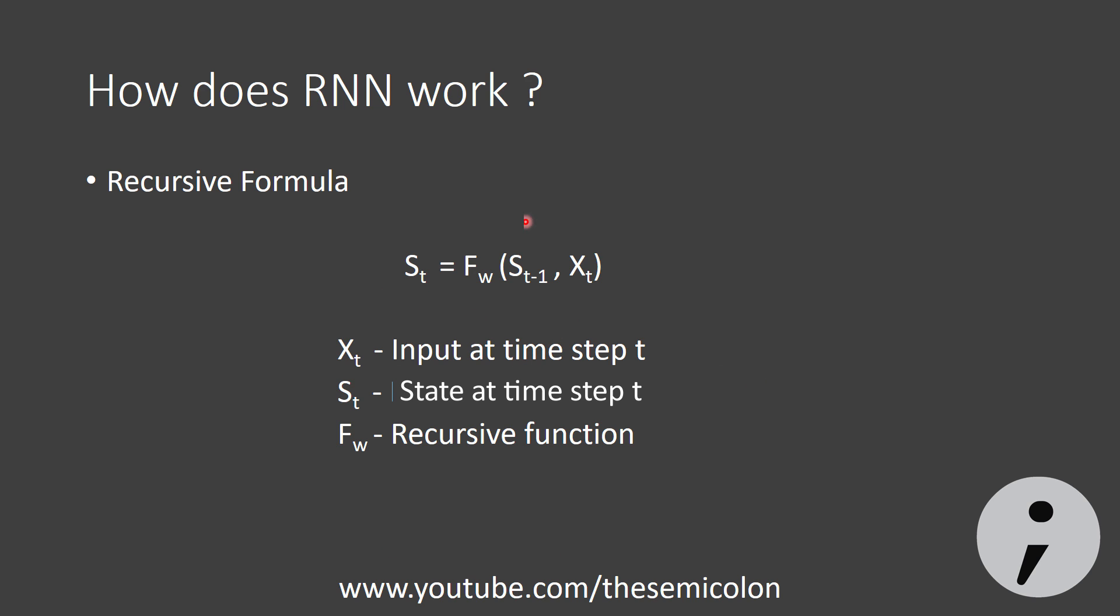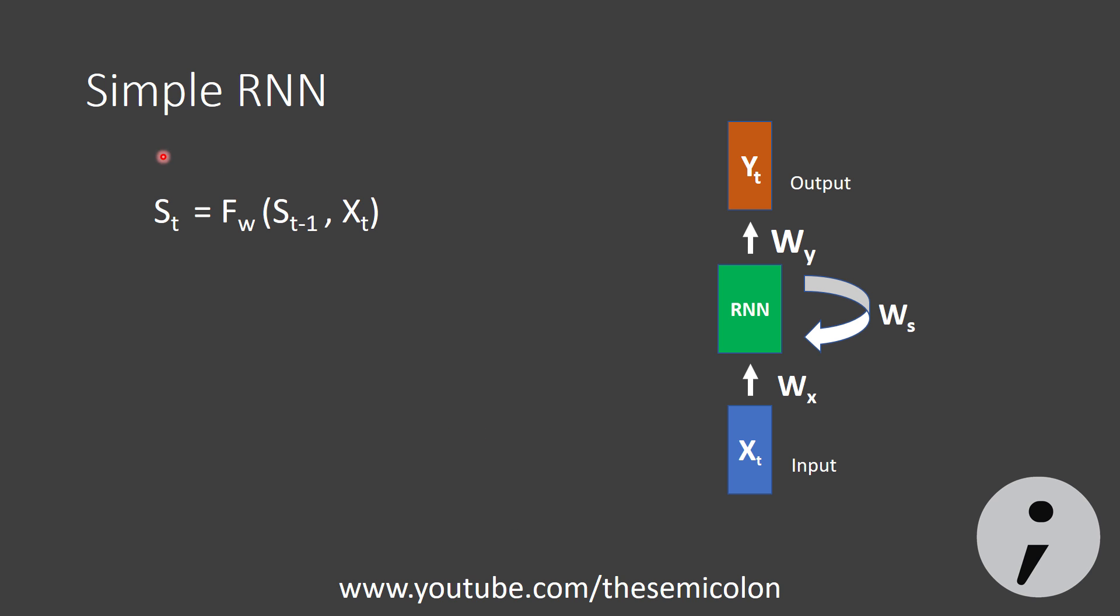Let's look at the simplest implementation of RNN and we call it simple RNN. It works on the formula we just discussed. The recursive function is a tanh function. We multiply the input state with weights of x, weight x and the previous state with Ws and then pass it through a tanh activation to get the new state. Wx and Ws are the weights. In many places, Ws and Wx are represented by W.